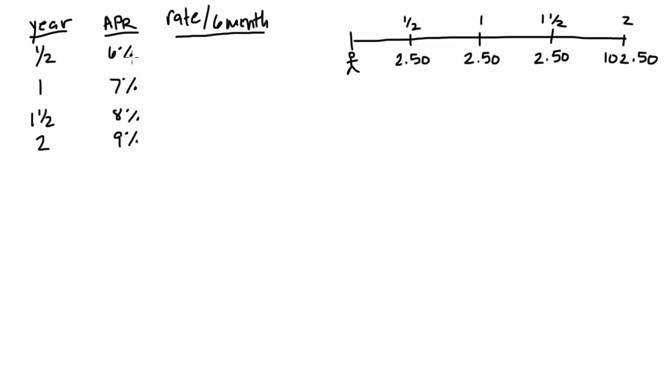So for an APR of 6% with a compounding period of six months, that means for every six-month period, the actual effective rate is 3%. Similarly, the 7% with semi-annual compounding will be 3.5%, 8% will be 4%, and 9% will be 4.5%.